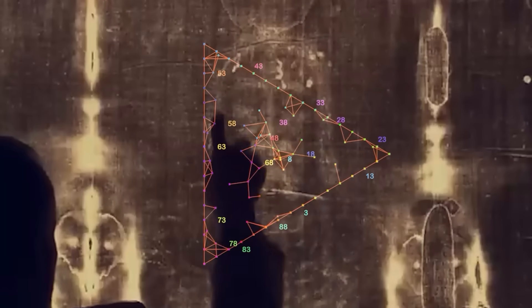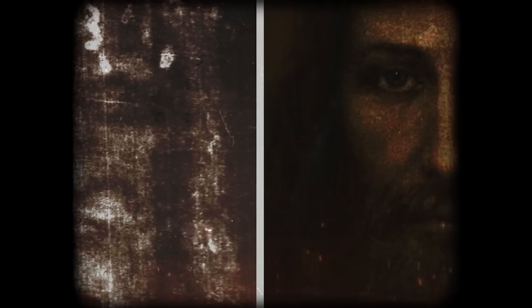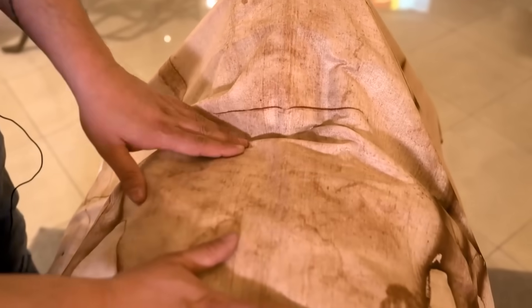The AI detected a hidden layer of digital information, a complex system of faint geometric symmetries and repeating mathematical ratios across the entire image. It found a structured order that has nothing to do with the image of a man. It's like finding a hidden watermark, or a ghostly blueprint, embedded deep within the fabric itself.